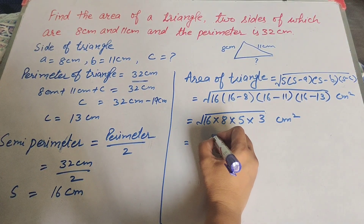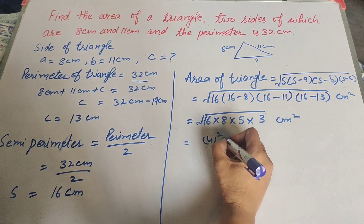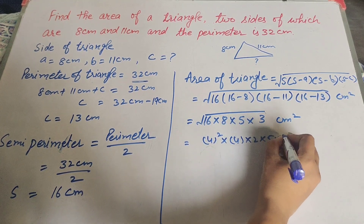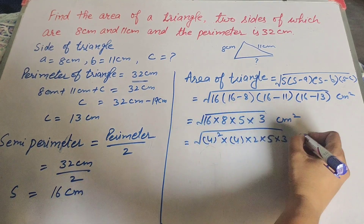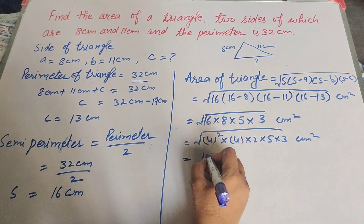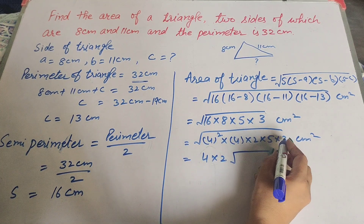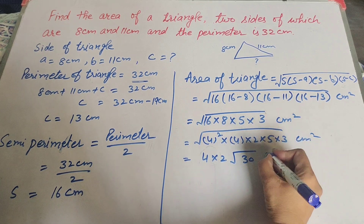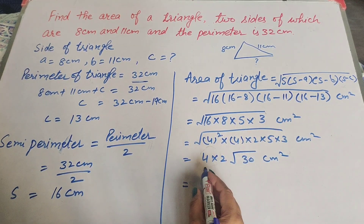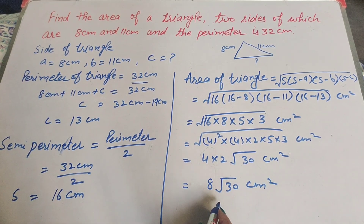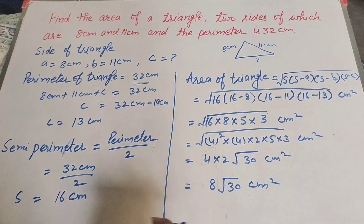We write 16 as 4 squared and simplify: square root of 4 squared times 8 times 5 times 3. The square root of 4 squared is 4, and 4 times 2 is 8, giving us 8 times square root of 30 centimeters squared. So the area of our triangle is 8√30 centimeters squared. Thanks for watching — like, comment, share, and subscribe to my YouTube channel.